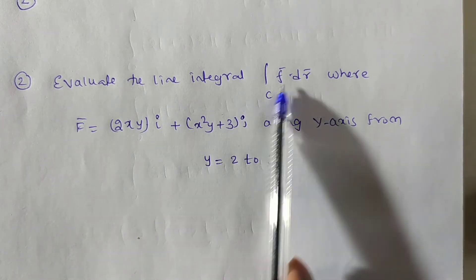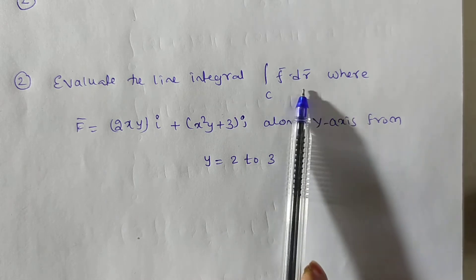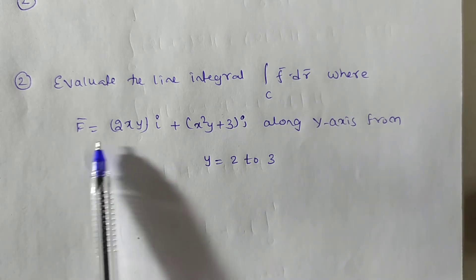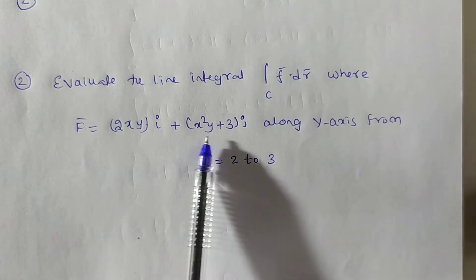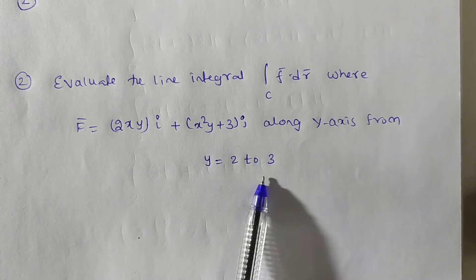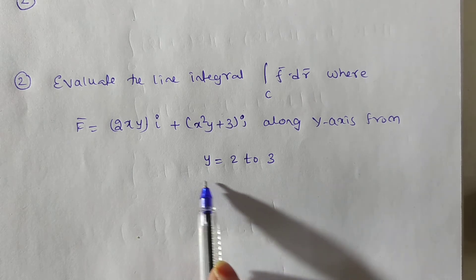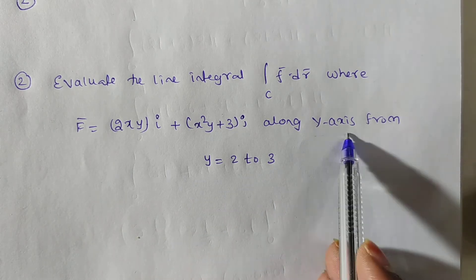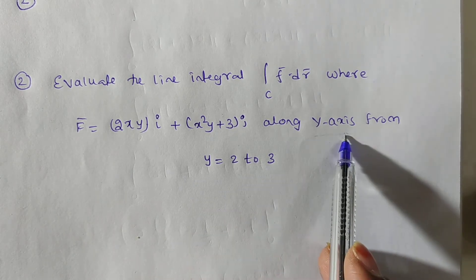The given problem is: evaluate the line integral over C f bar dot dr bar where f bar equals (2xy)i+(x²y+3)j along the y-axis from y=2 to 3. Here they are given limits and the curve is y-axis.